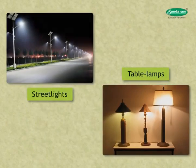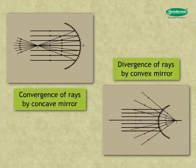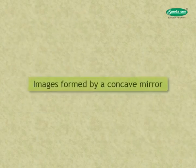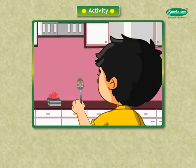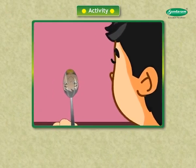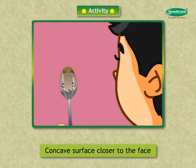Convergence and divergence of rays by concave and convex mirrors are shown here. Let us see how images are formed by a concave mirror. Take a large shining metal spoon and bring its deeper, that is concave surface, closer to your face. Can you see your image? We can see an upright and magnified image.